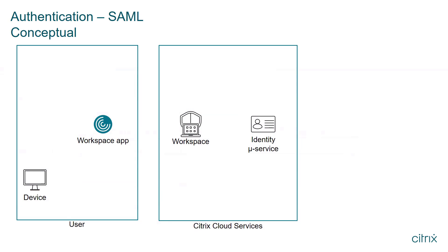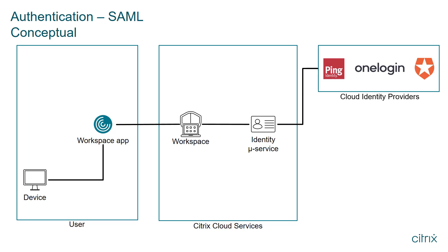Once the user accounts are synchronized, a user launches Workspace app, which connects to Citrix Workspace. Workspace requests authentication from the identity microservice, which forwards the request to the SAML identity provider. When the user successfully authenticates, the SAML identity provider sends an assertion to the identity microservice proving the user successfully authenticated. This assertion includes specific Active Directory parameters.